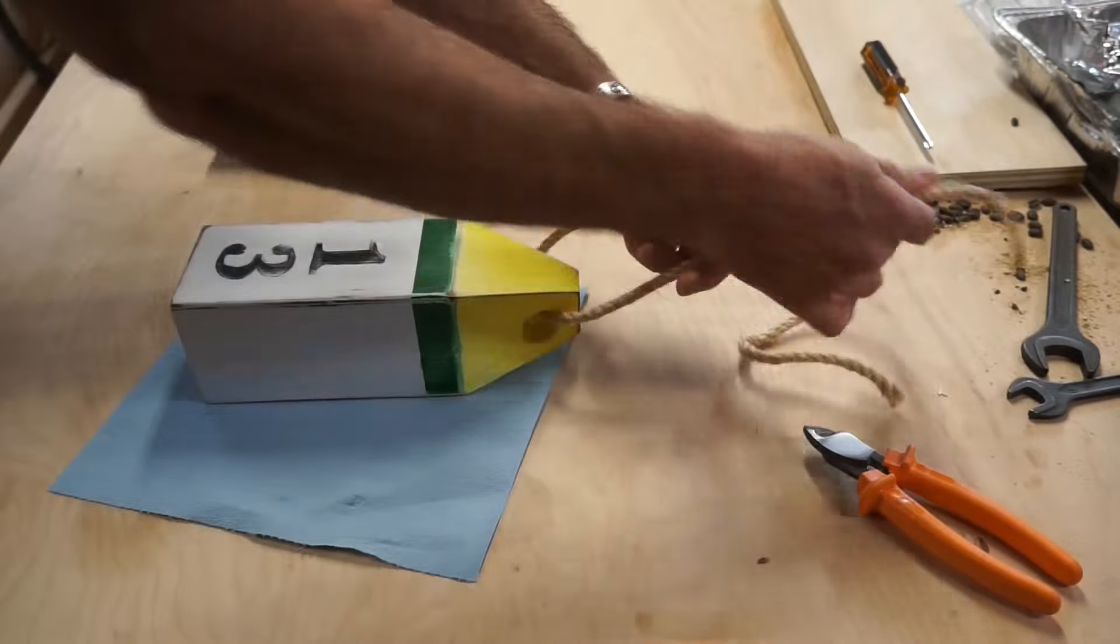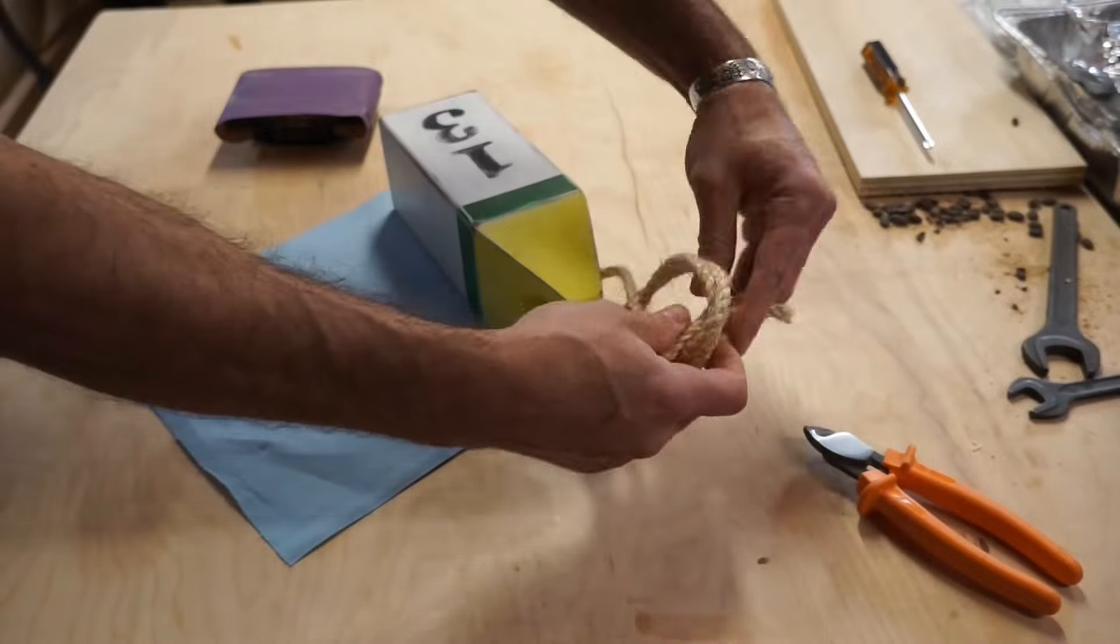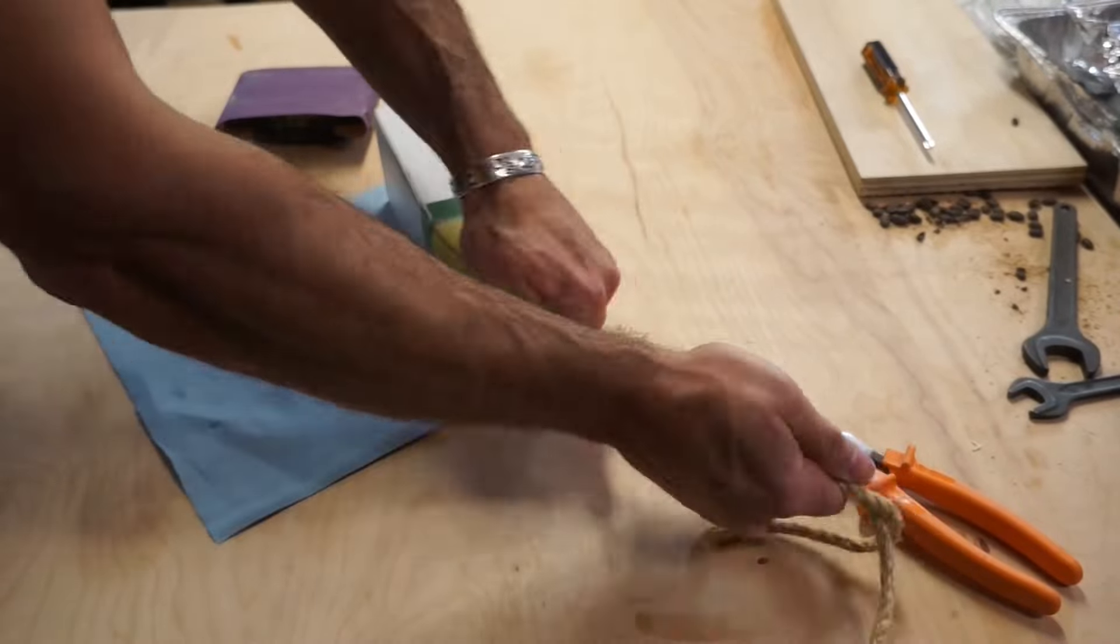And finally, just grab some extra rope you got laying around, feed it through the hole, tie it into a knot, and you got a boss buoy.